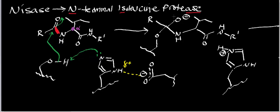We now have a tetrahedral intermediate with an alkoxide. The alkoxide electrons kick back down and — just like in the cysteine protease — they kick off the amine as a leaving group. The amine's electrons come out and abstract the proton from the histidine, regenerating the resting state of the histidine.